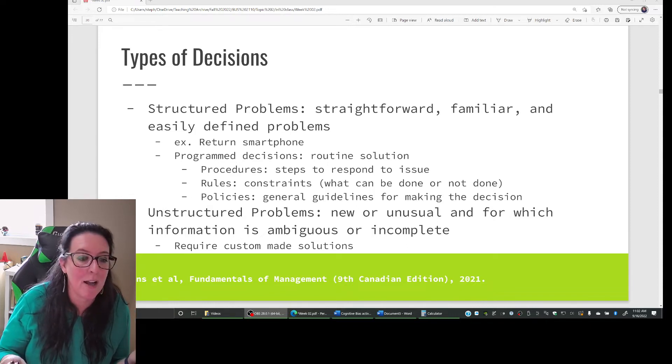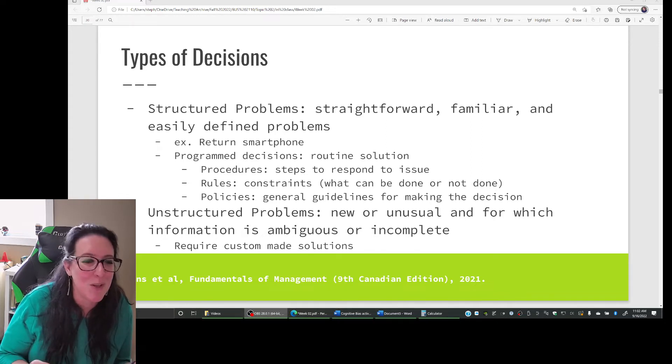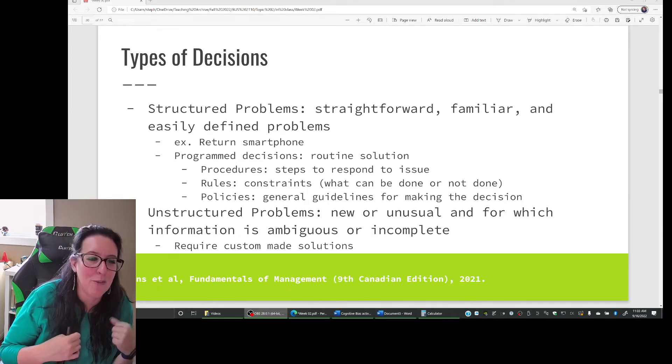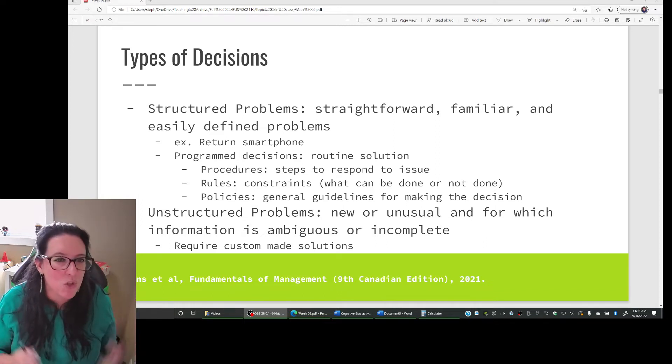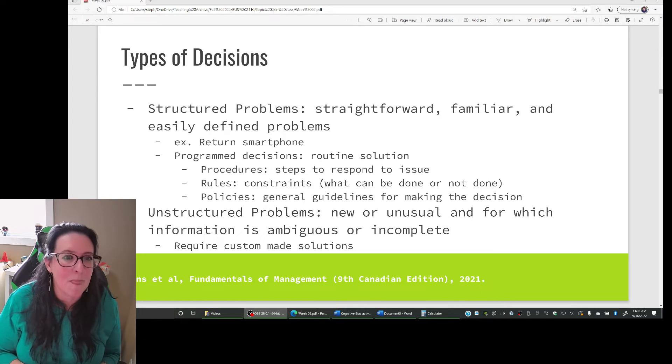And our last check in the process, our control is to make sure that the customer is satisfied. Maybe it's about fair and equity. What is fair and equitable in terms of how we would deal with one person coming in with their phone versus another person. But with structured problems, we have programmed decisions. We have a routine solution for how we deal with them.